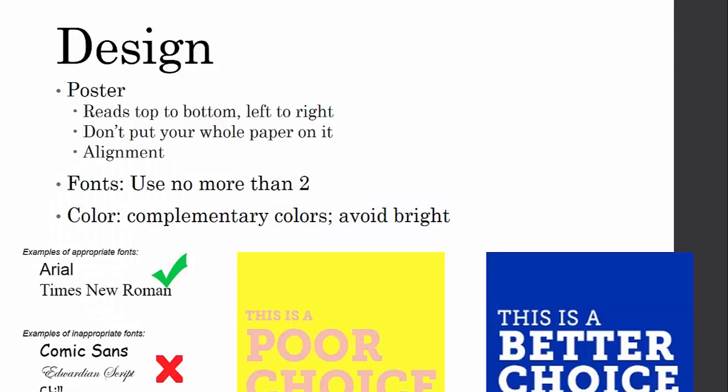Posters read from top to bottom, left to right — it's really important to think about that when designing your poster. You don't want your introduction on the bottom left; that's not how anyone's going to read it. Think about how to structure your poster so it makes the most sense. Don't put your whole paper on your poster — no one wants to read your whole paper. What they want are the highlights, the key points. How can you summarize and make it visually appealing?